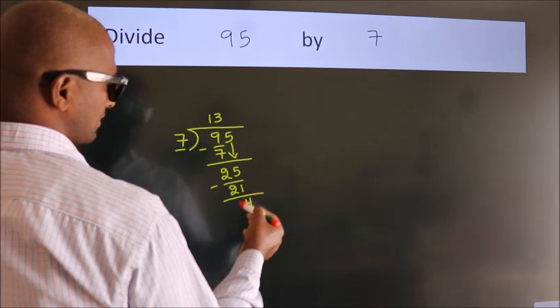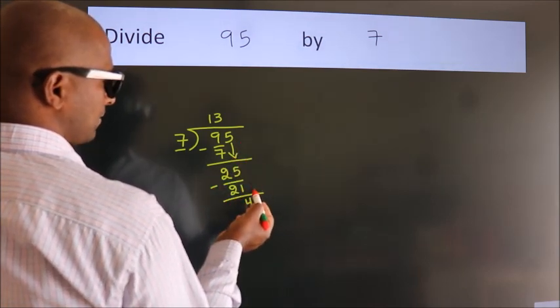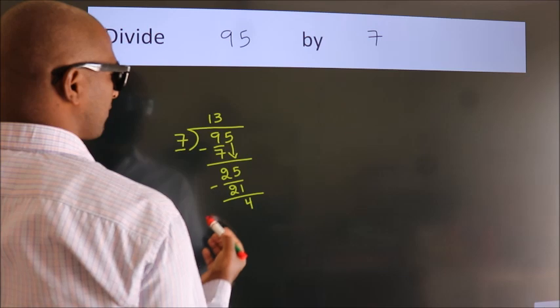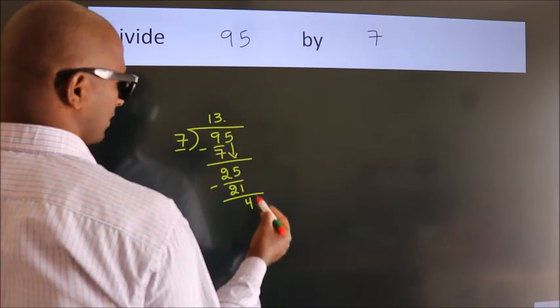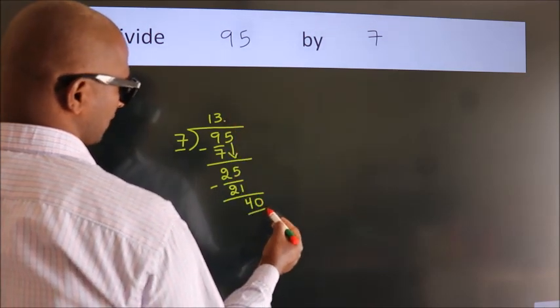After this, no more numbers to bring it down. So, what we do is we put dot, take 0. So, 40.